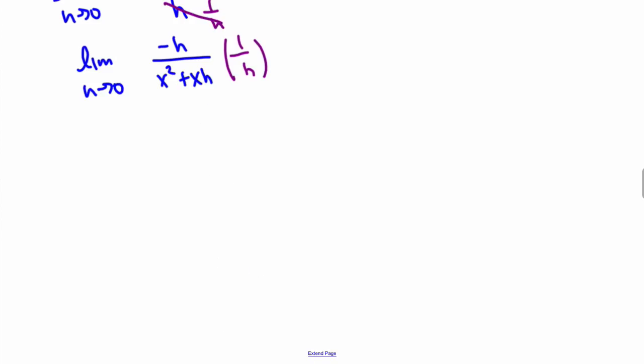Okay, almost there. So now you can see that these will cancel, and I'll be left with the limit as h approaches 0 of minus 1 over x squared plus xh.